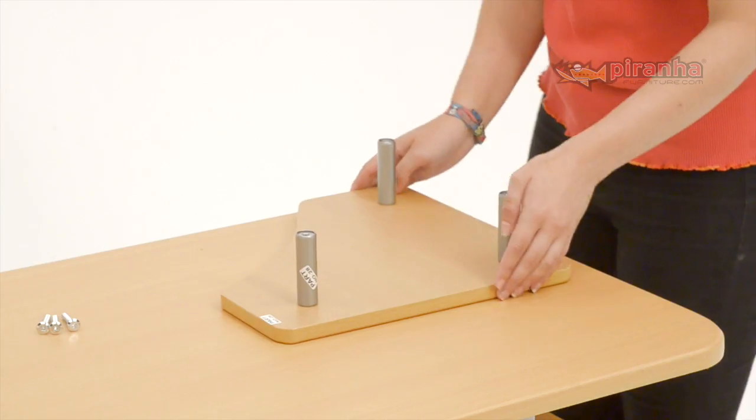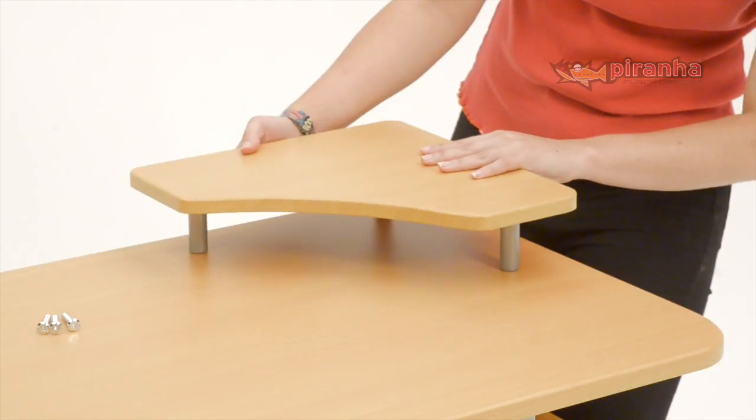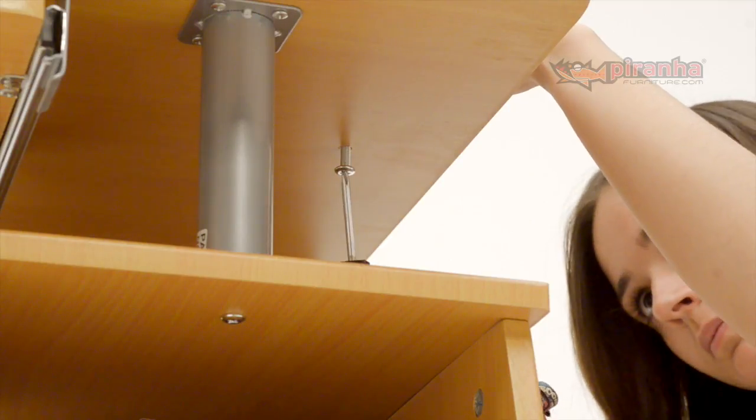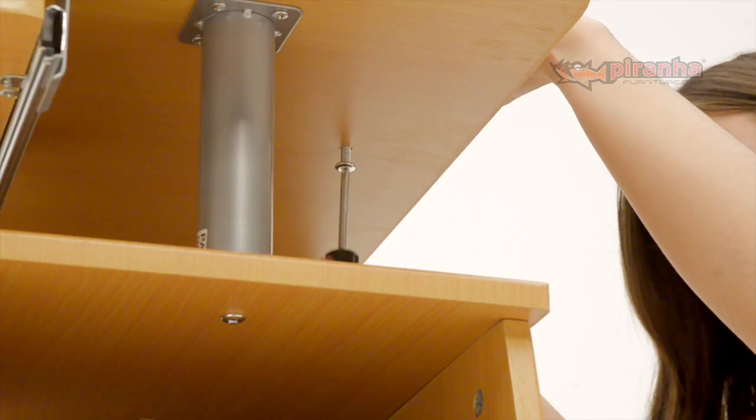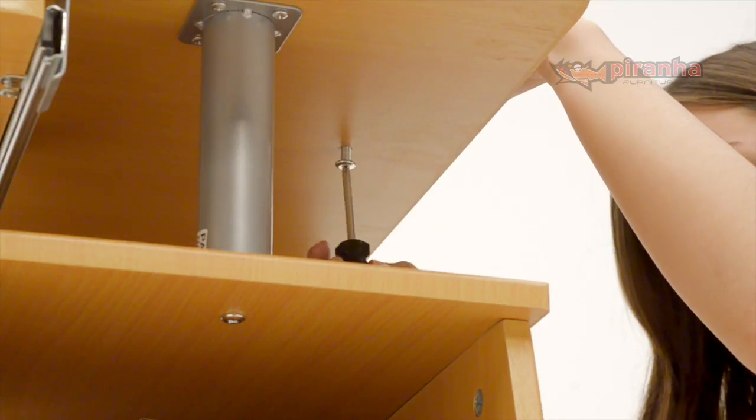Step 24. Now, invert the raised shelf and place it so the support poles locate over the three pre-drilled holes in the right-hand side of the desktop. Fix the shelf in place by fitting the 6x35mm threaded bolts through into the support poles from the underside of the desktop.